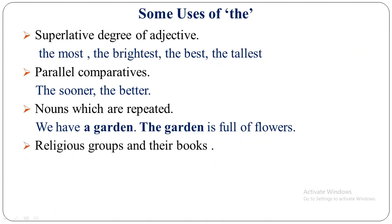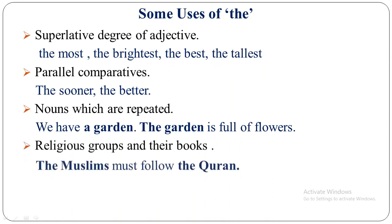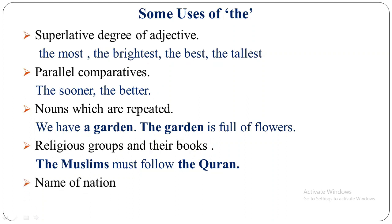Religious groups and their books: for example, 'The Muslims must follow the Quran.' Here Muslim is a religious group and their holy book is the Quran, so we use THE before Muslims and THE before Quran. Like that, 'The Hindus must follow the Mahabharata.' Name of a nation: we must use THE before the name of a nation. For example, the English means English people, the Bengali means Bengali people.